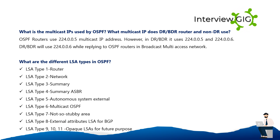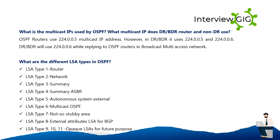What are the different LSA types in OSPF? LSA Type 1: Router. LSA Type 2: Network. LSA Type 3: Summary. LSA Type 4: Summary ASBR. LSA Type 5: Autonomous System External. LSA Type 6: Multicast OSPF. LSA Type 7: Not-So-Stubby Area. LSA Type 8: External Attributes LSA for BGP. LSA Types 9, 10, 11: Opaque LSAs for future purpose.